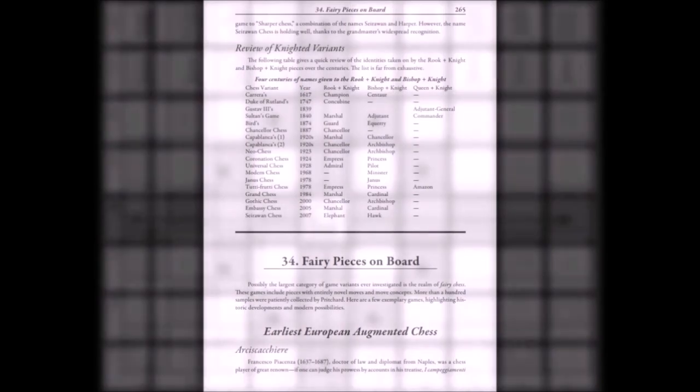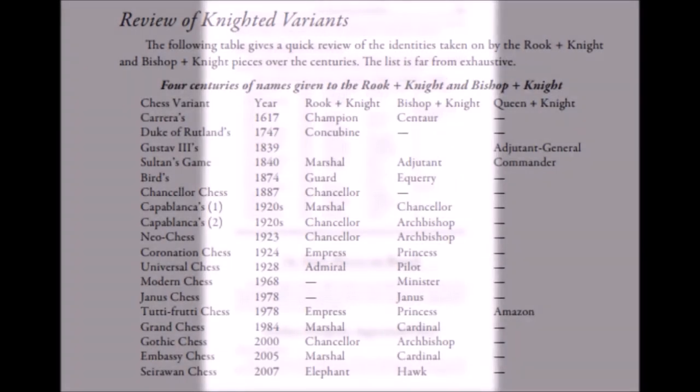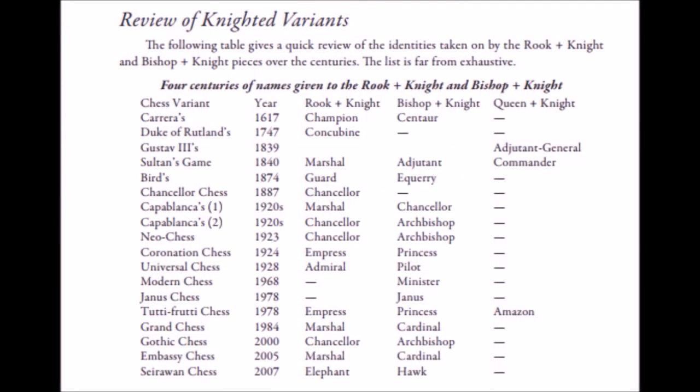Many comparative charts throughout the text are used to put the games in chronological perspective. For instance, the knighted pieces concept shown from the 17th century through modern times.